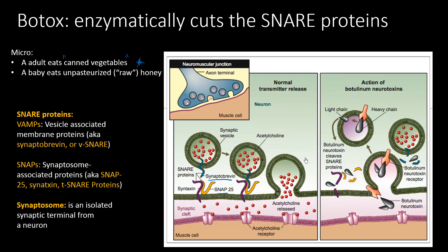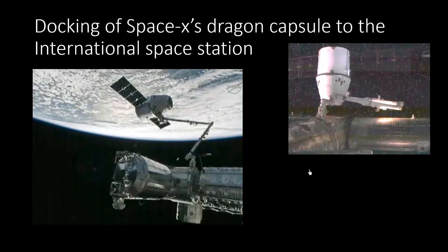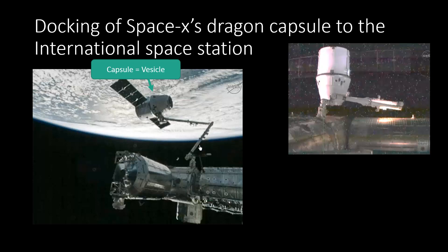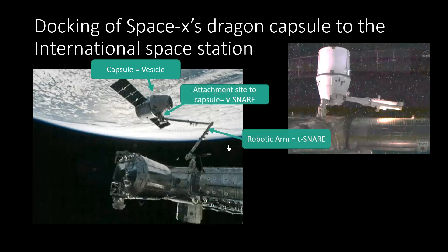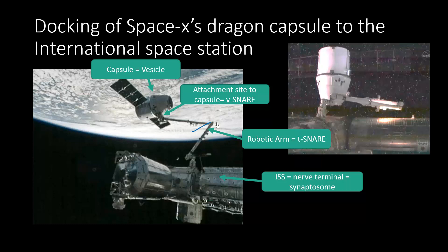Here's another way to think about it: the docking of SpaceX Dragon's capsule to the International Space Station. The Dragon capsule represents the vesicle, the attachment spot on the vesicle is the V-snare protein, the robotic arm is the T-snare protein, and the International Space Station is the nerve terminal. What Botox does is cleave the V-snare so the vesicle cannot bind and attach to the nerve terminal.